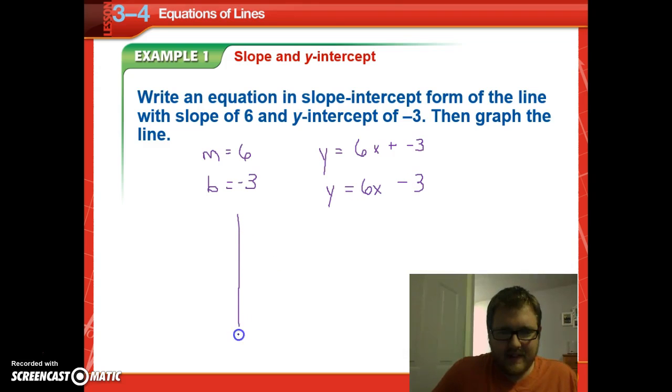Now to graph it, when you have it in slope-intercept form, it's pretty simple. We're just going to go ahead and find negative 3 on the y-axis. So go down 3 and plot a point. And then our slope is 6, so we're going to go up 6: 1, 2, 3, 4, 5, 6. And we're going to go over 1, since it's technically 6 over 1. And we have our line.